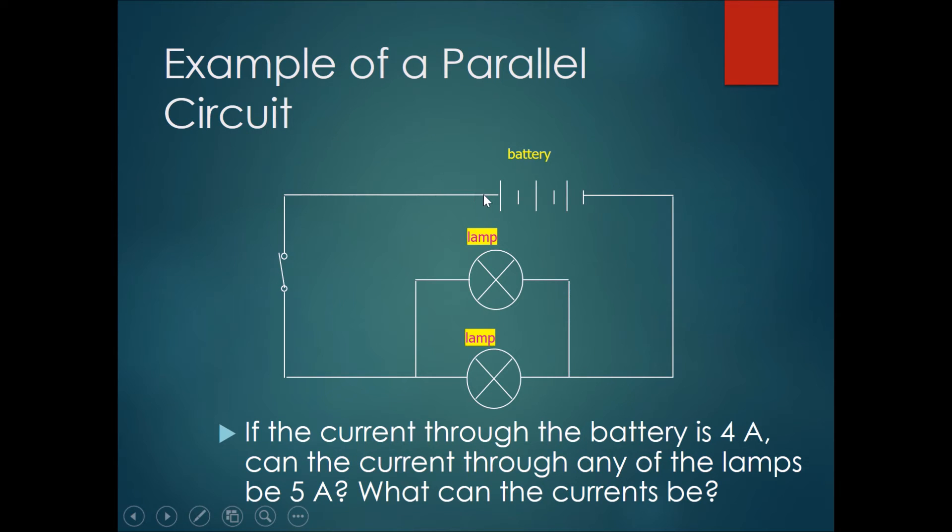that the current flowing out through here will be the most, is the maximum. And then when it branches off, the current over here would split up. Maybe it will split unevenly or maybe evenly. However, the sum of the current flowing through these two branches will equal the main.